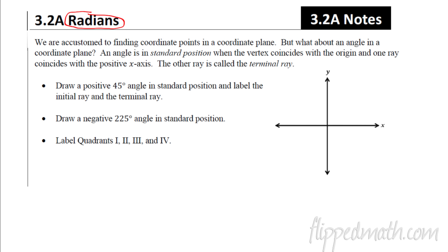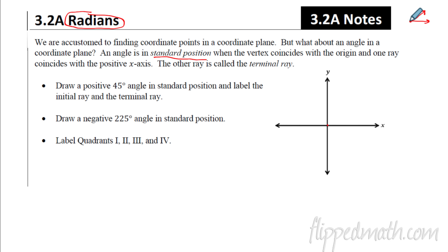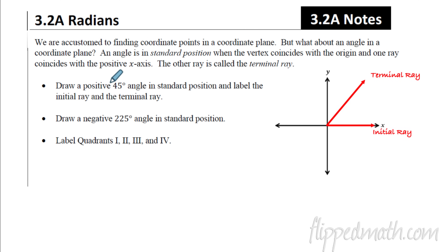Radians are a different way to measure angles. We're used to using a coordinate plane when we plot points and graph functions — we go over x, up y. For angles, there's a standard way too: we put an angle in standard position by placing the vertex on the origin. An angle is made up of two rays; the vertex is where the rays intersect. One ray coincides with the positive x-axis and the other ray is called the terminal ray.